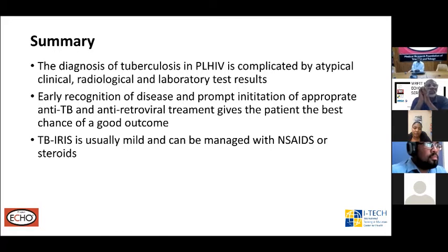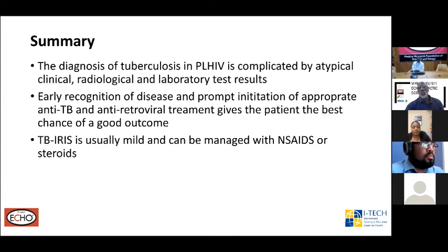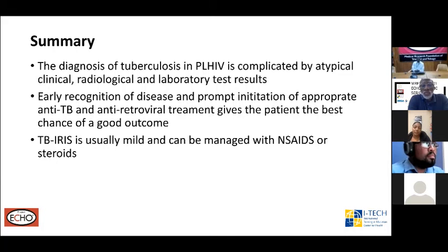In summary: the diagnosis of TB among persons with HIV is complicated by atypical clinical, radiological, and laboratory findings. Early recognition and prompt initiation of appropriate anti-TB and antiretroviral treatment gives the patient the best chance of a good outcome. TB-IRIS is usually mild and can be managed with non-steroidal anti-inflammatories or steroids. That concludes the presentation — thank you very much, and I'll open the floor for questions.